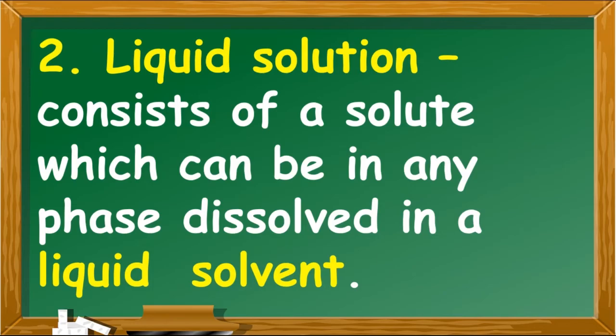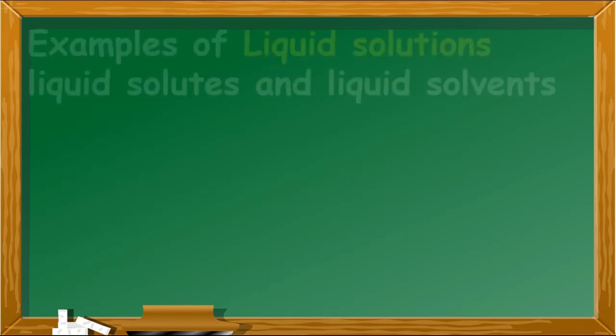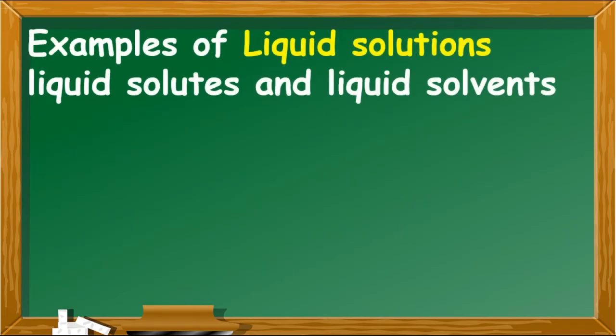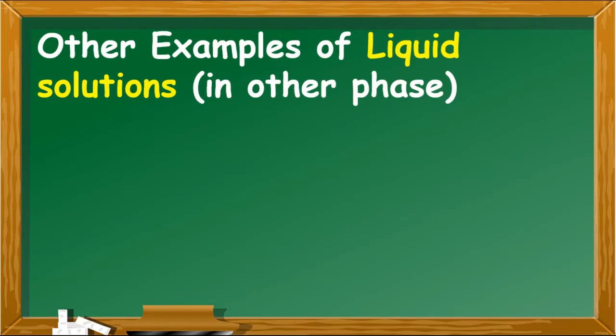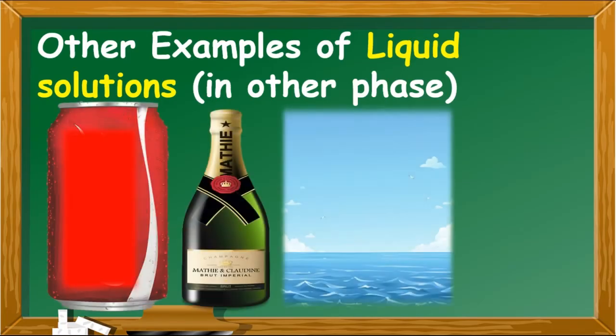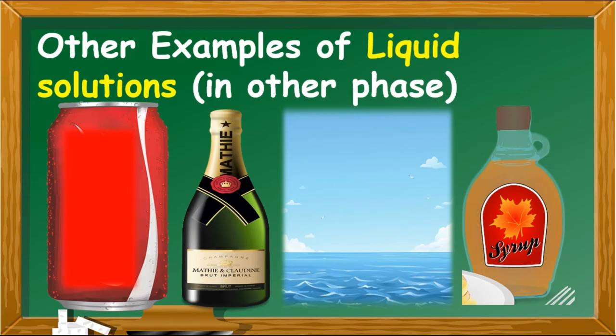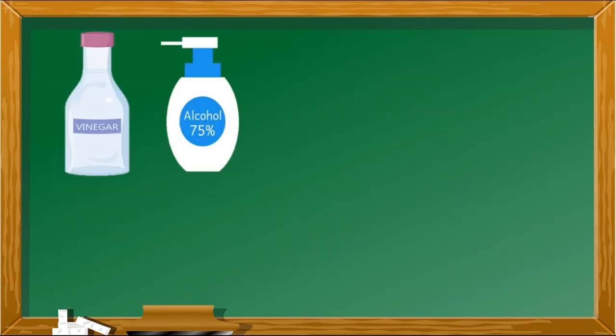Number two: Liquid solution consists of a solute which can be in any phase dissolved in a liquid solvent. Examples of liquid solutions that have liquid solutes and liquid solvents are vinegar and alcohol. Other examples of liquid solutions include soda, wine, ocean water, and syrup.